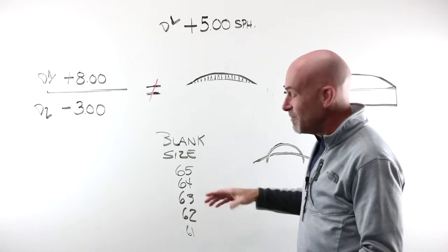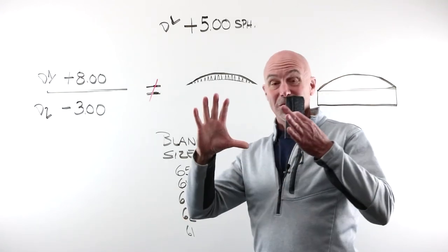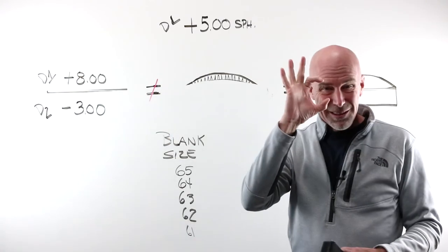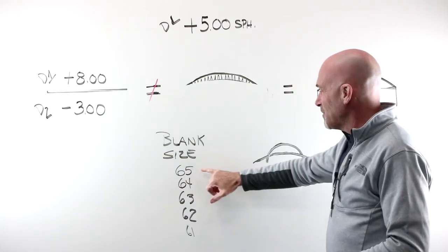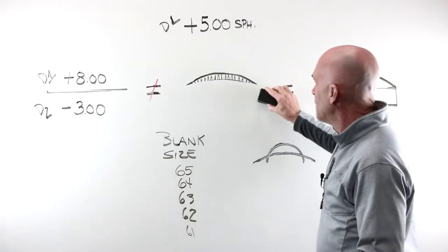You'll notice, once you start doing this stuff, when you get your stock single-vision lenses, your minus blanks, nice and big, you can always get great cut-out. Plus blanks, little tiny things, real pain in the butt. My blank size went from 65, to 64, to 63, to 62, to 65. Every pass.